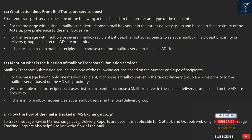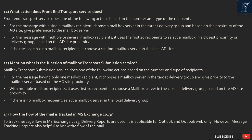Question 12: What is the function of the mailbox transport submission service? The mailbox transport submission service does one of the following actions based on the number and type of recipients. For a message with only one mailbox recipient, it chooses a mailbox server in the target delivery group and gives priority based on AD site proximity. With multiple mailbox recipients, it uses the first 20 recipients to choose a mailbox server in the closest delivery group based on AD site proximity. If there is no mailbox recipient, it selects a mailbox server in the local delivery group.